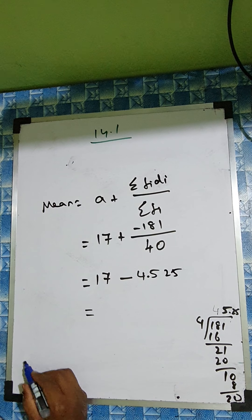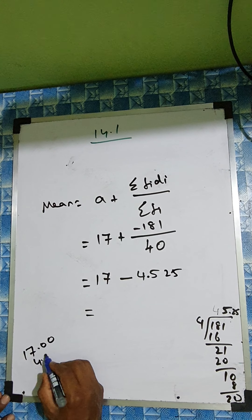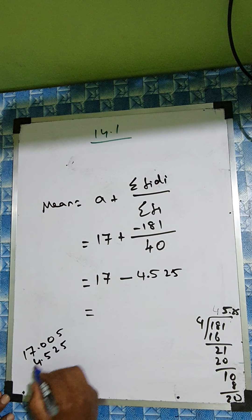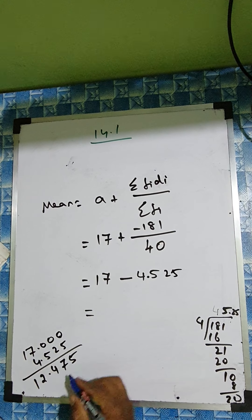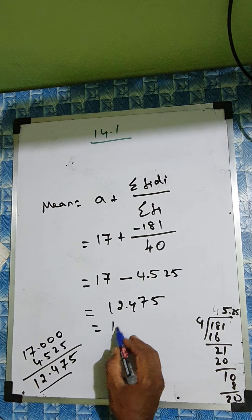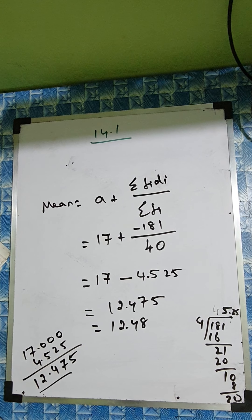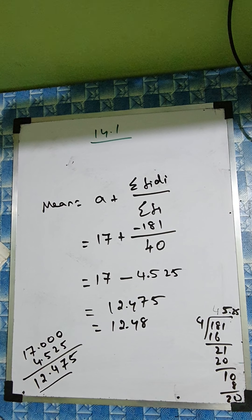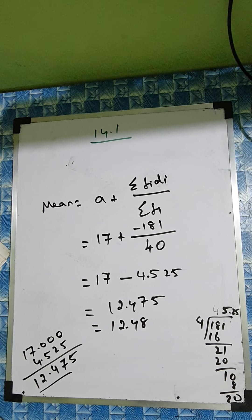So now we'll subtract this: 17 minus 4.525. So we'll subtract and write the answer here. So if you subtract, you'll get answer 12.475. We'll just make it 12.48. So the mean is 12.48.